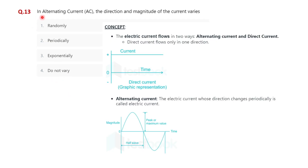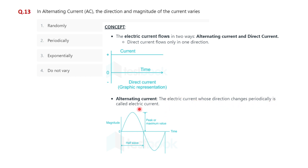Question thirteen: in alternating current (AC), the direction and magnitude of current varies periodically — option two is correct. Electric current flows in two ways: AC and direct current (DC). In DC the current flows directly in one direction like a uniform signal, while in alternating current the current changes periodically — that is, the electric current whose direction changes periodically is called alternating current.